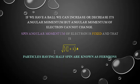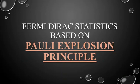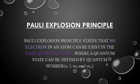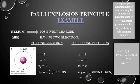Fermi-Dirac statistics are based on the Pauli Exclusion Principle. The Pauli Exclusion Principle states that no two electrons in an atom can exist in the same quantum state. The quantum state is defined by four quantum numbers: n, l, ml, and ms, where n is the principal quantum number. With these four quantum numbers we can distinguish particles from each other.